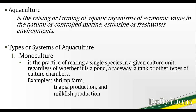There are technically three types or systems of aquaculture: monoculture, polyculture, and integrated farming. In monoculture, only a single species is reared in a given culture unit such as a pond, raceway, tank, or some other culture chamber. The classic examples of monoculture are shrimp farming, tilapia production, and milkfish production.